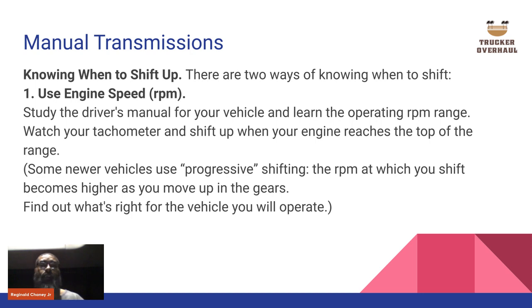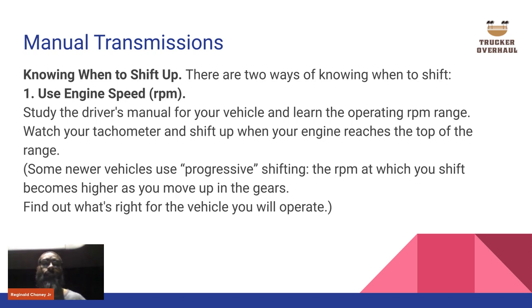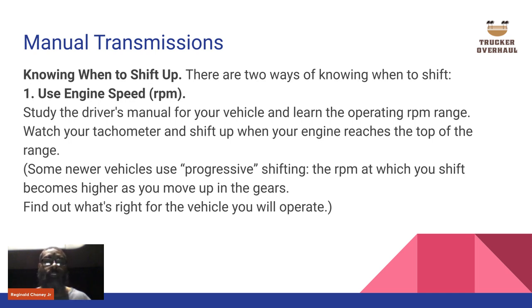Knowing when to shift up — that's the key. There are two ways: you can use engine speed (RPMs) shown on your tachometer on the dash, or road speed via the speedometer. Study the driver's manual for your vehicle, learn the operating RPM range, watch your tachometer and shift up when your engine reaches the top of the range. Some newer vehicles use progressive shifting where the RPM at which you shift becomes higher as you move up in gears.